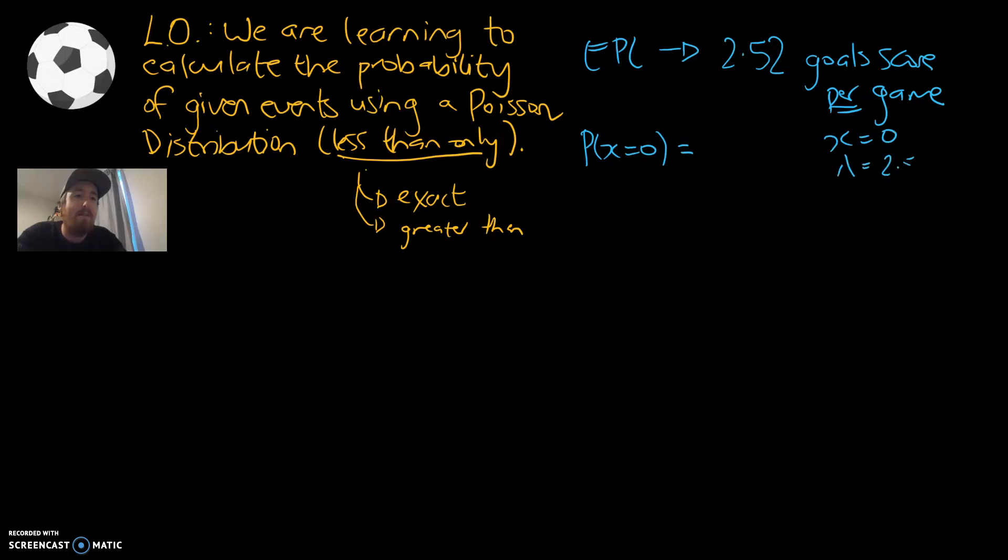Lambda, or the mean, would be 2.52, and we'll be using the PPD function of our calculator because we're looking for an exact point or X equals something. When I put that in my calculator, I figured it out to be 0.0805, rounded to 4DP.